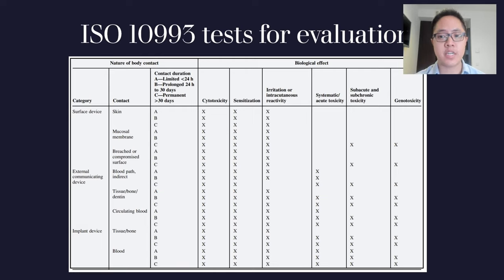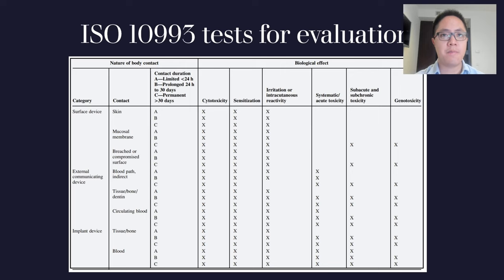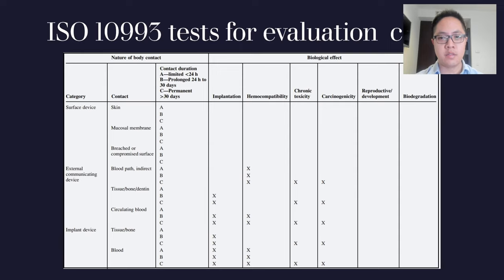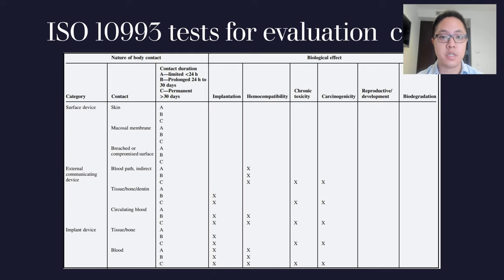Interestingly, on this table, 'permanent' duration is actually considered only more than 30 days — so there's a lot of gray in this field of testing. Materials will not necessarily be tested for all criteria, only a select number of them.